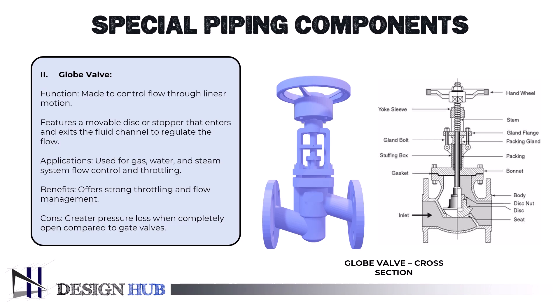Automated globe valves are usually operated by an actuator assembly and have smooth stems instead of threaded ones.